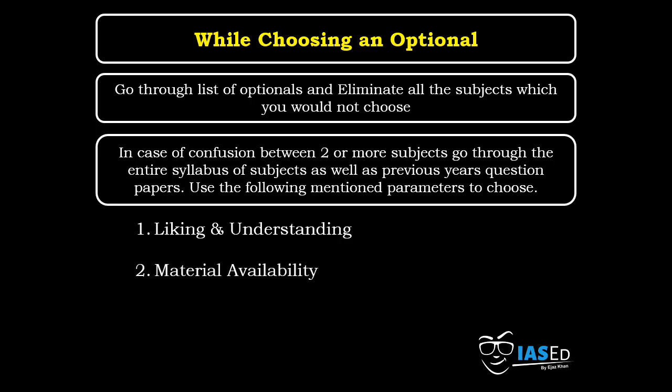The second parameter is the availability of material — availability of books, notes, and whatever basic requirements you need while preparing. In this digital world, we do not face much problem getting material, but you should ensure you can access it whenever required. The third and most important parameter is the availability of guidance. It is very important to have command over your subject, but while preparing, you will often come across topics where you get confused. In that case, you need guidance from seniors, an educator, or some other source of help. I consider this one of the most important parameters.